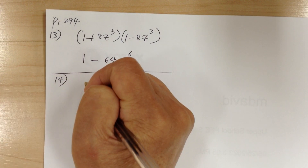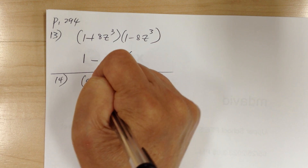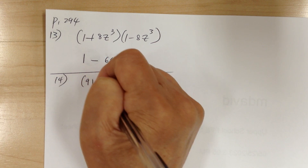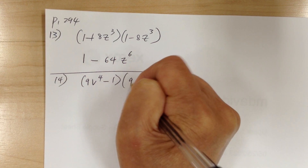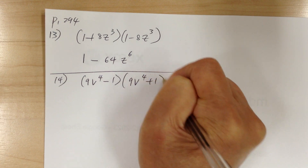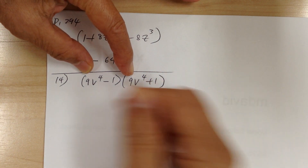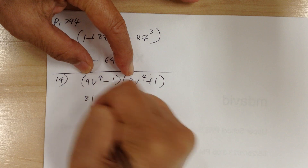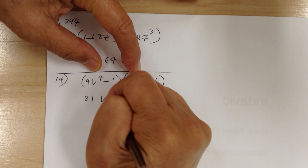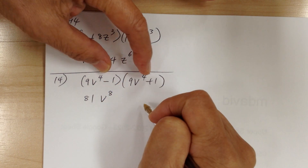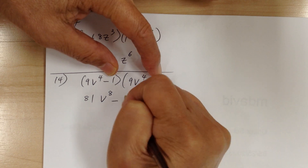Number 14: you have 9v to the 4th minus 1 times 9v to the 4th plus 1. Conjugate, so multiply: 9 times 9 is 81, v to the 4th times v to the 4th is v to the 8th, negative times positive is minus, 1 times 1 is 1.